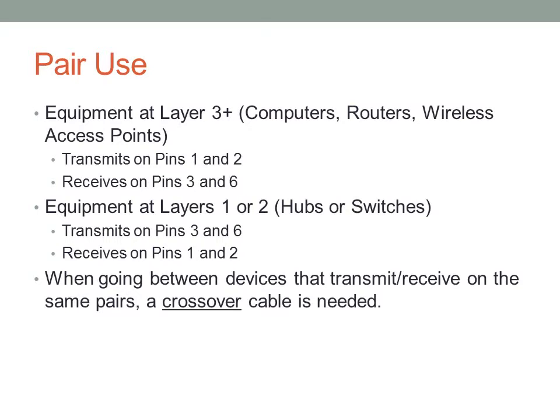What if we want to go from, say, a computer directly to a router? Both of these devices transmit on pins 1 and 2 and receive on pins 3 and 6. So if either one tries to transmit, they'll both be raising voltages on the same line, and pins 3 and 6 will go unused — dead space. What we have to do is use what's called a crossover cable. A crossover cable takes pins 1 and 2 on one side and rewires them to pins 3 and 6 on the other side, allowing us to connect two devices of the same type.